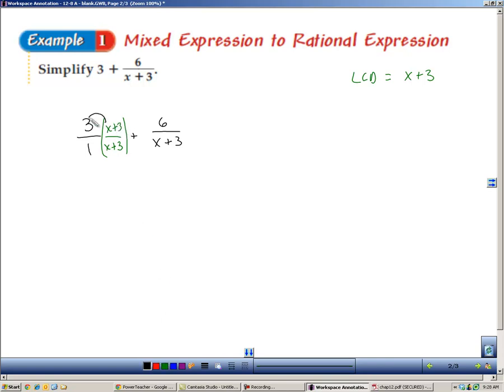We'll now distribute this 3 on top. So 3x plus 9, and then we'll add 6 to that, and it will be over the common denominator of x plus 3 that we created. So continuing to simplify, 3x plus 15 over x plus 3.